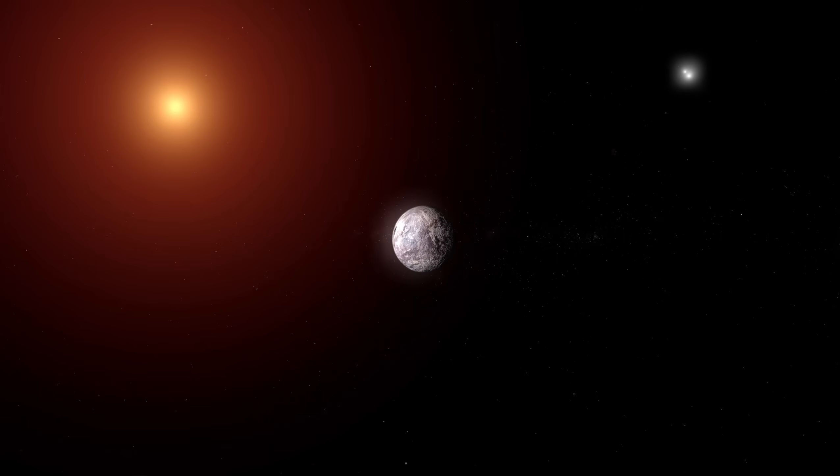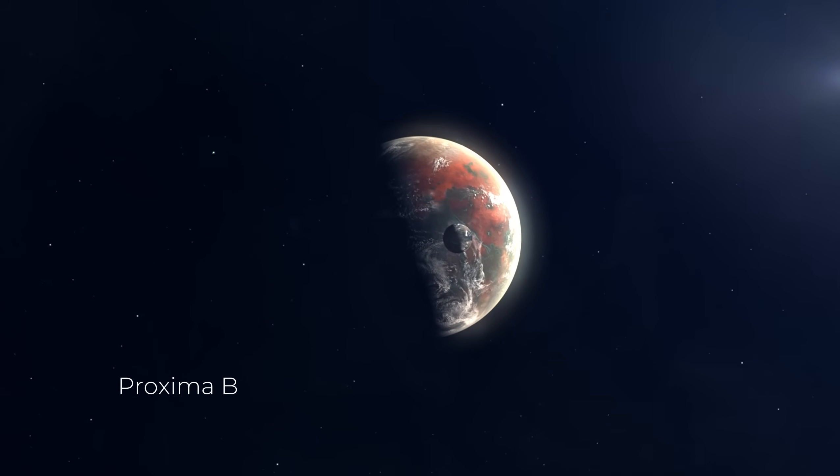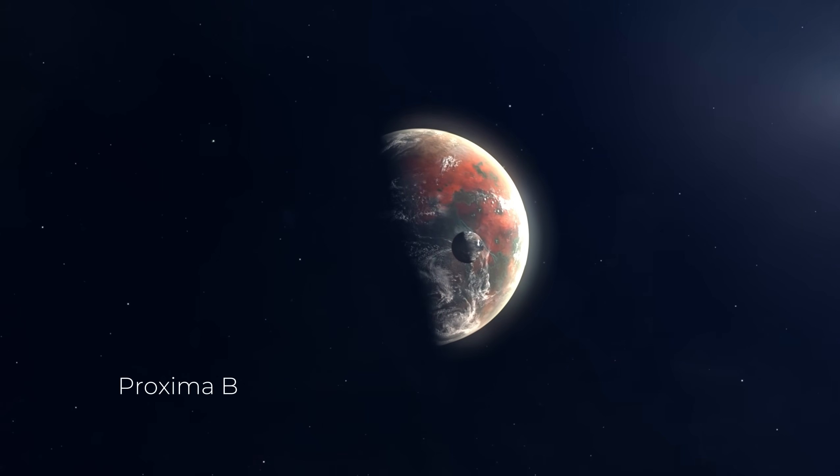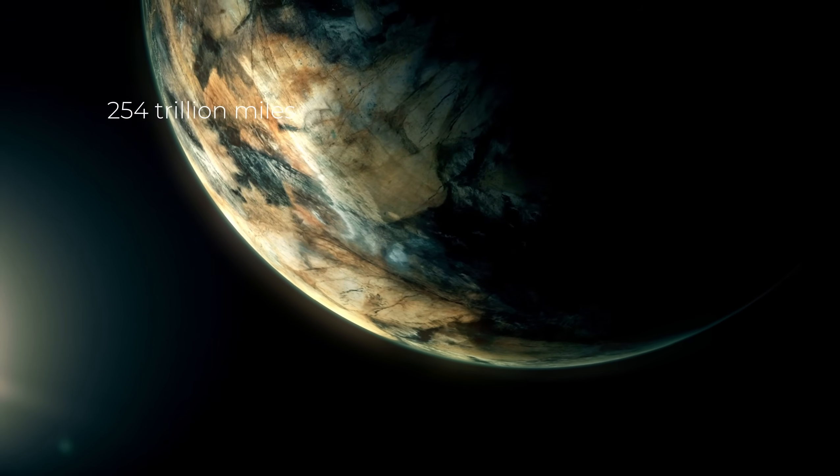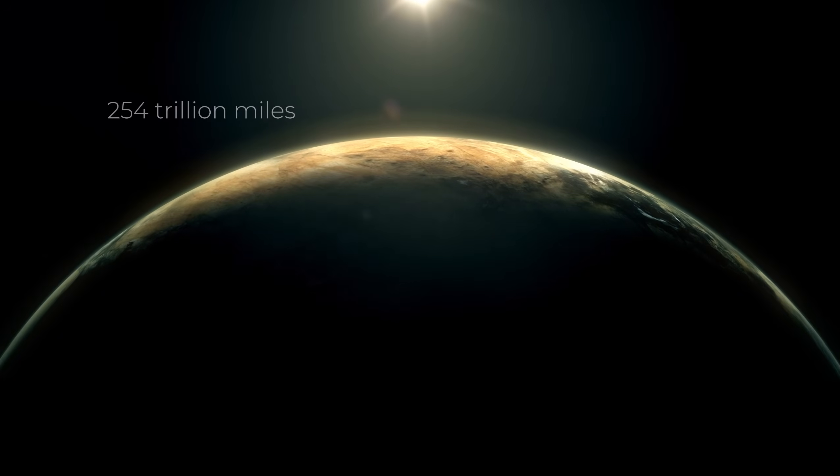Let us step back for a second. This intriguing exoplanet orbits a star called Proxima Centauri, the nearest star to our solar system. At a distance of roughly 254 trillion miles, it is a big number, but when it comes to space, it is practically our next-door neighbor.